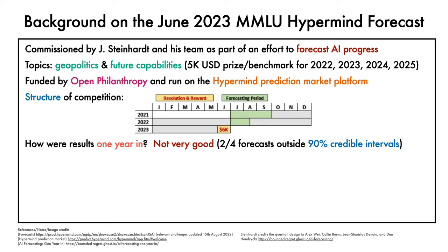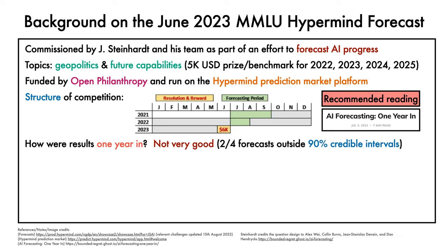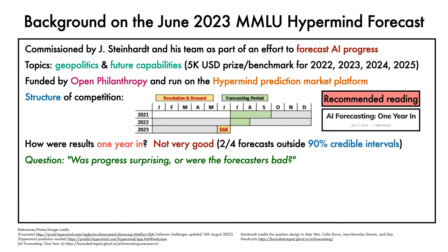Two of the four forecasts had outcomes that fell outside 90% credible intervals. For a good summary, I recommend reading the blog post by Steinhardt entitled "AI Forecasting One Year In." This post poses the question: was progress surprising, or were the forecasters bad?